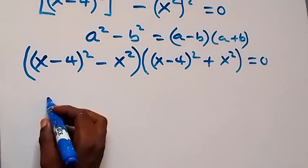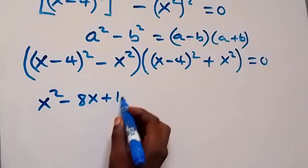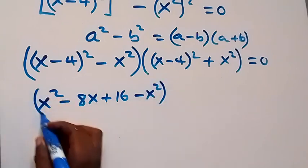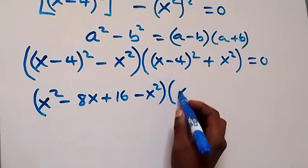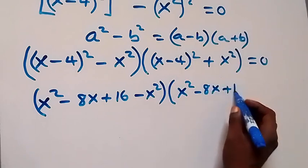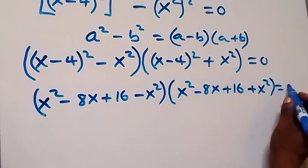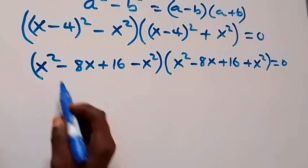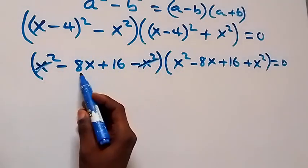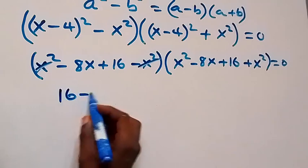When we expand the first bracket: (x minus 4) squared becomes x squared minus 8x plus 16, then minus x squared. The x squared terms cancel out, leaving minus 8x plus 16, which we can write as 16 minus 8x.